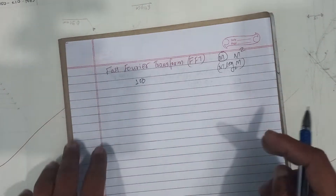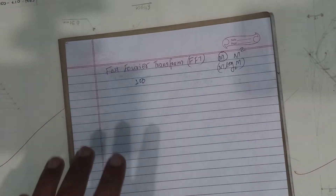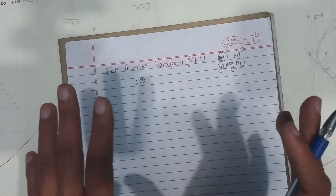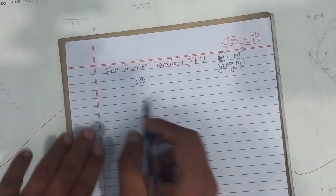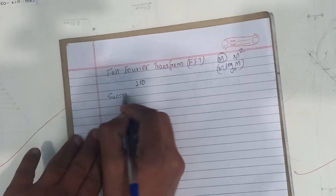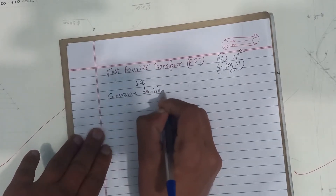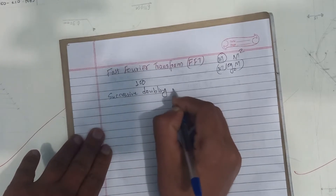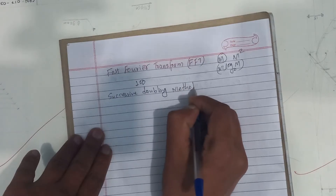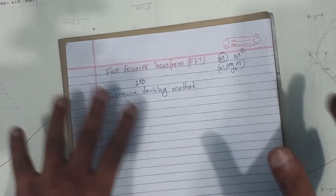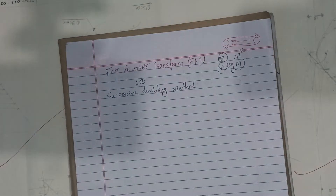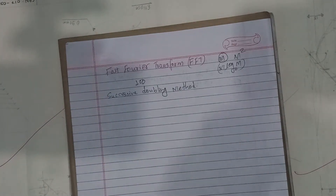How do we develop the Fast Fourier Transform? What is the successive doubling method? The successive doubling method is used to develop the Fast Fourier Transform using the discrete Fourier Transform.